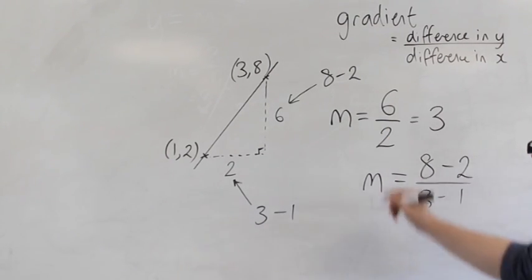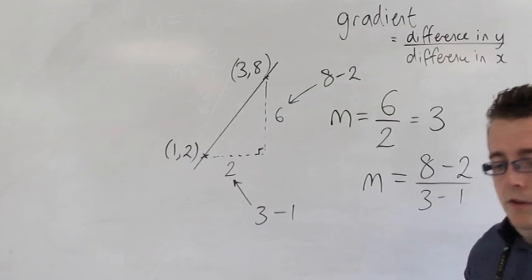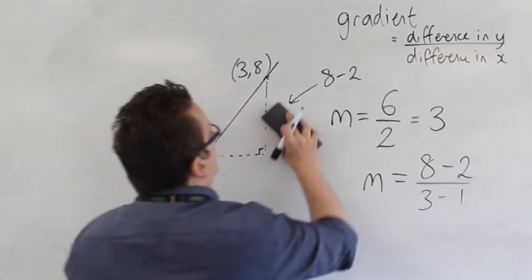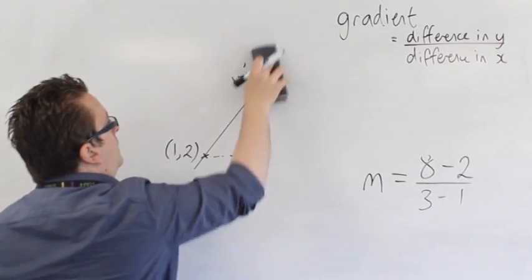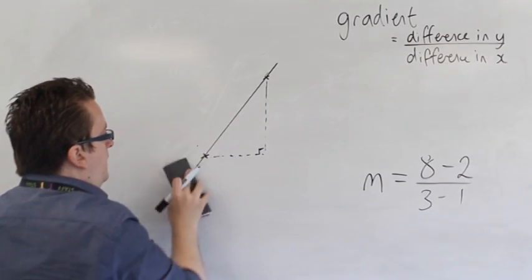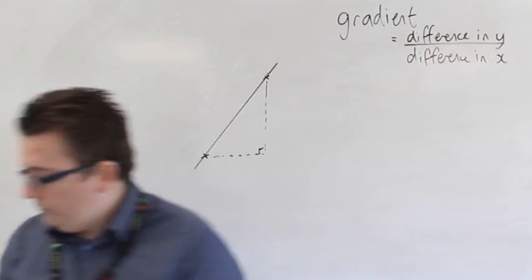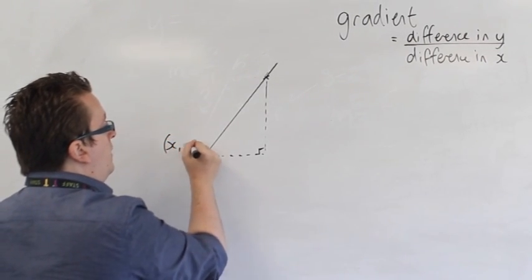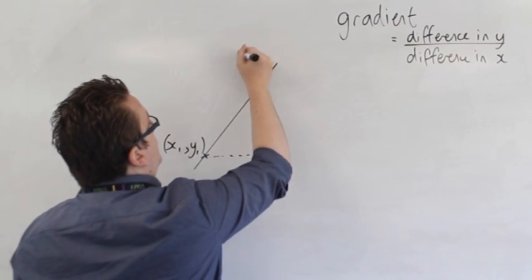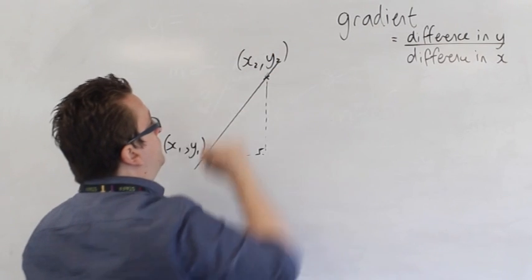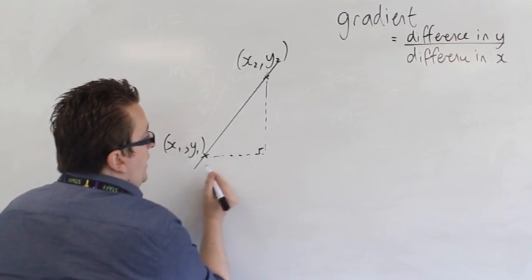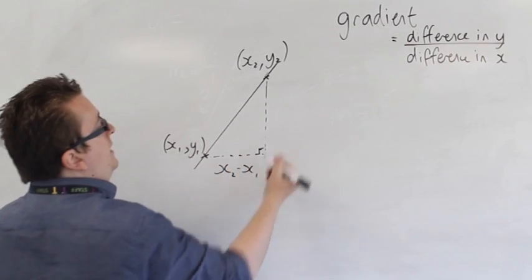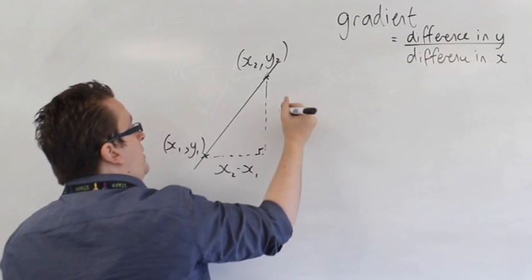So that is my sum that I'm doing here. So if I then make this more general and say that this point is the coordinate X1, Y1, and this is the coordinate X2, Y2, then this distance was actually found from doing X2 take away X1. This distance is found by doing Y2 take away Y1.